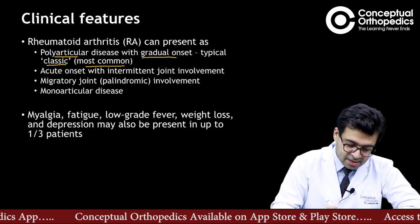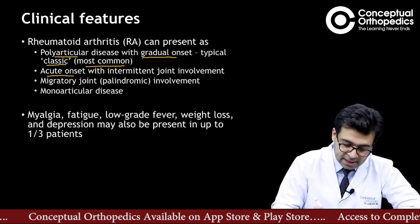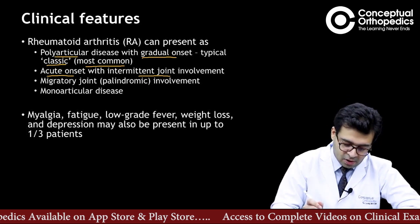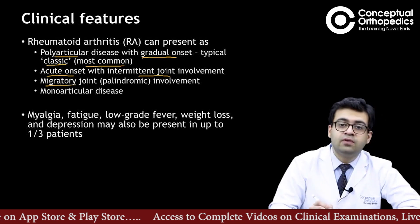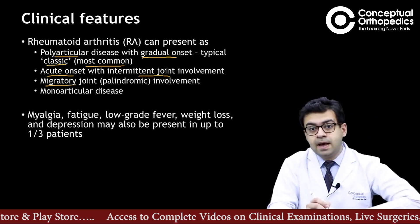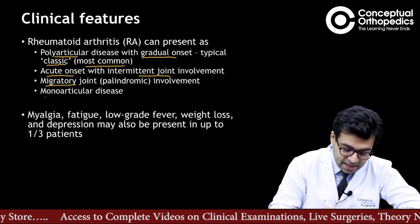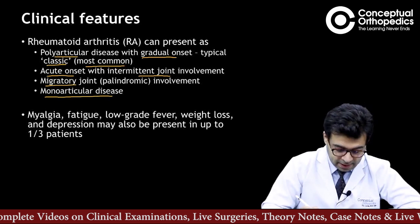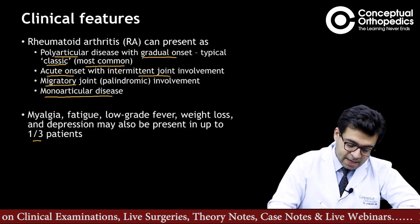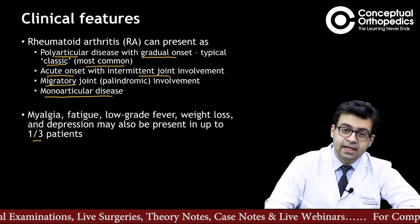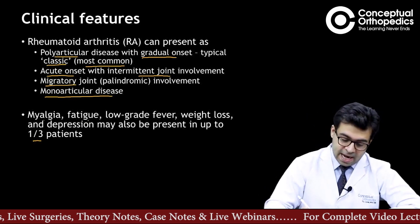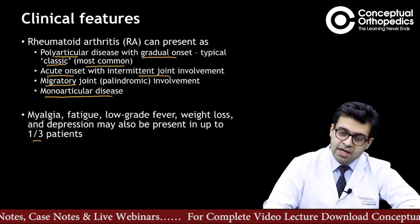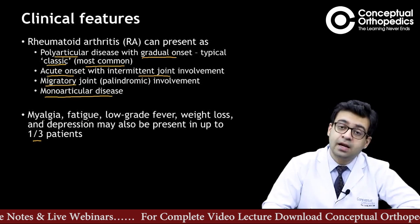The next presentation is acute onset with intermittent joint involvement, which is less common compared to polyarticular disease. Then comes migratory joint involvement, also known as palindromic involvement. The least common is monoarticular disease. About one third of patients can have myalgia, fatigue, low-grade fever, weight loss, and depression — these are the commoner extra-articular manifestations seen in RA patients.